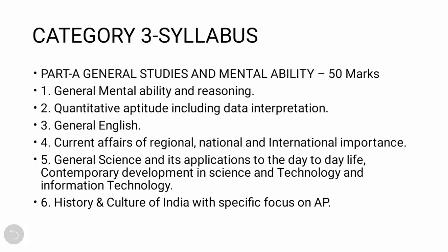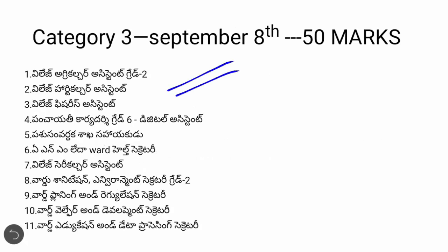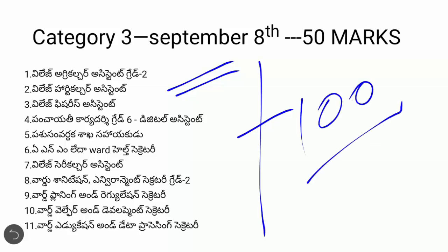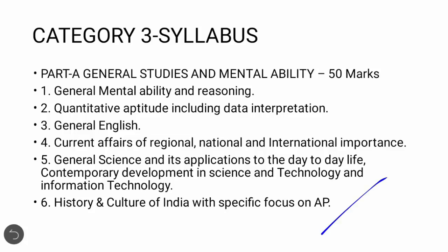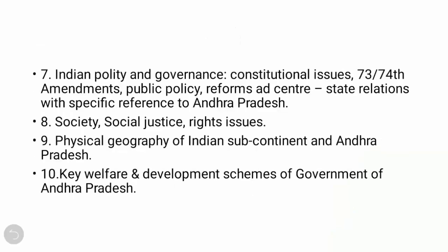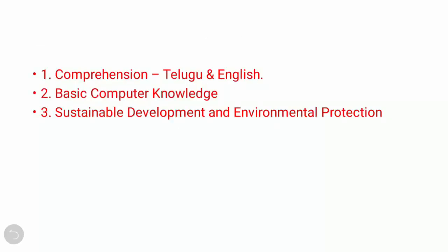If you have 100 marks, you have to cover the subject according to your eligibility. There are 150 marks total — Part A is 50 marks and Part B is 150 marks, and we are looking for 50 marks. In Category 1, you have to divide all topics — in history, in science and technology, in general science. You have to take that exam in Category 3 as well. You have to follow up with current affairs and updates.